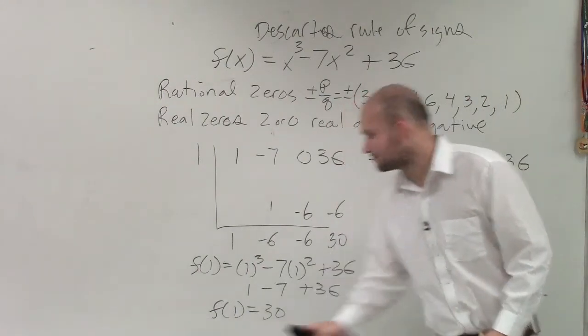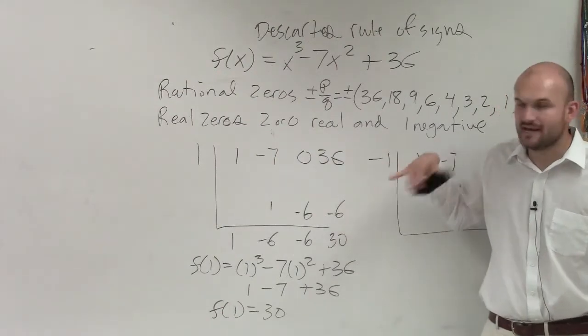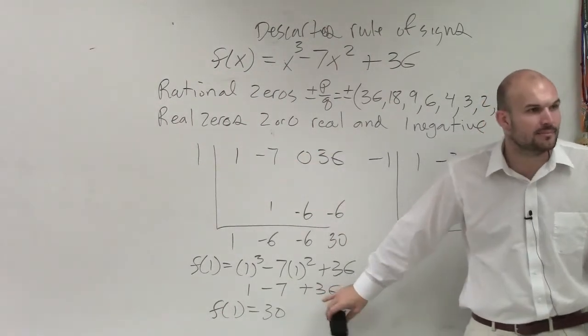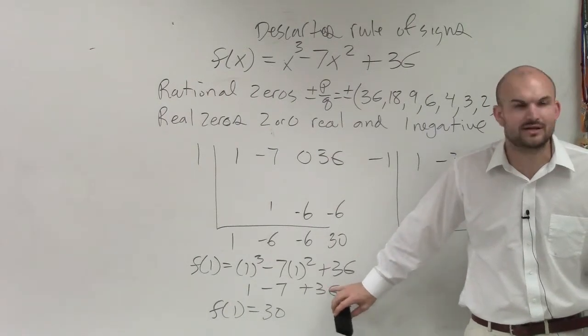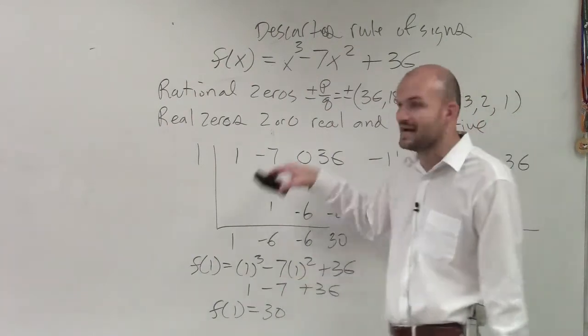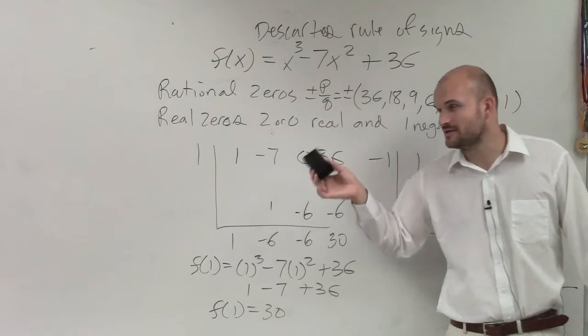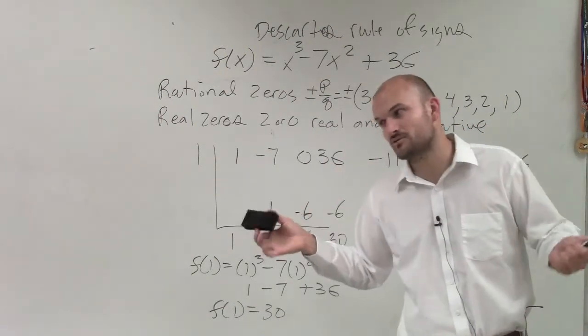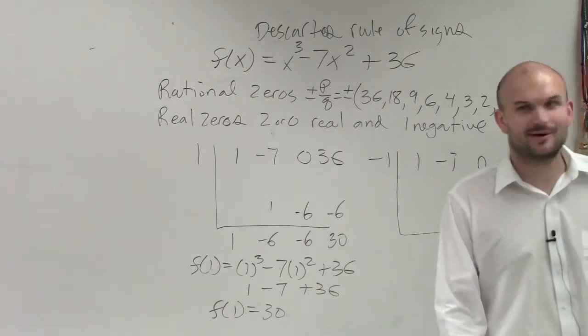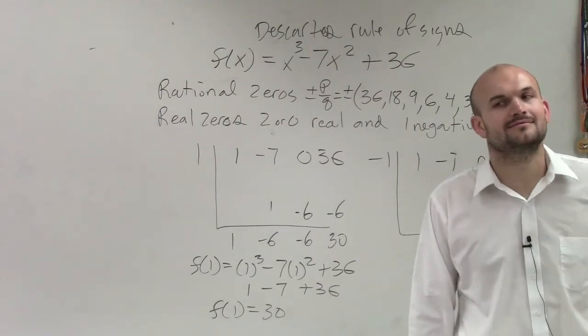However, does anybody know why would I want to show, if I can find a zero, why would I want to show it by synthetic division rather than by using this remainder theorem here or by plugging it in? What's the difference? They both tell you if it's a zero or not, but why is synthetic division preferred? Does anybody know yet? Do you want to try it? Just give an answer.